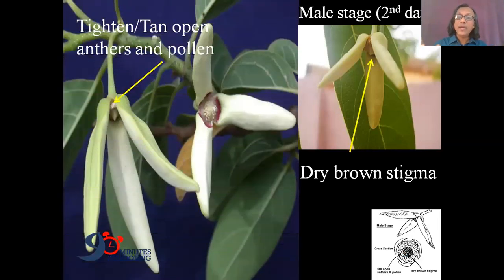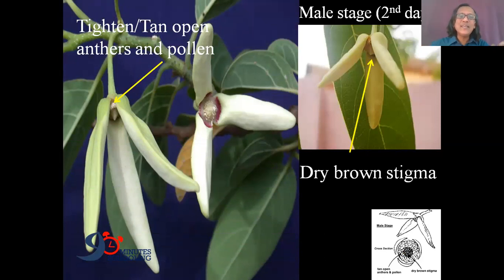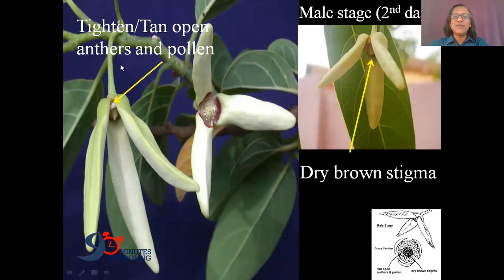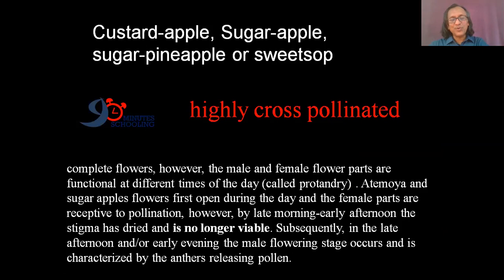Now we have a pollen collection. What is the pollen collection? We have a female stage. The same pollen is here in this place. The same is the same — it is highly cross-pollen.